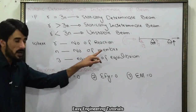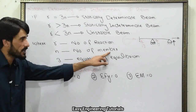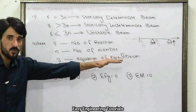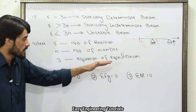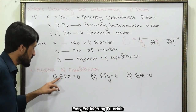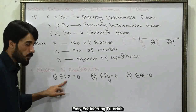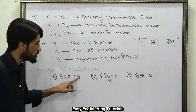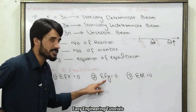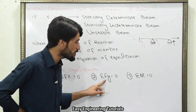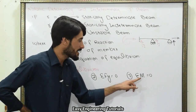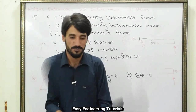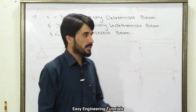N is the number of members, and 3 represents the equations of equilibrium: summation of all forces along the X-axis equals zero, summation of forces along the Y-axis equals zero, and summation of all moments equals zero.